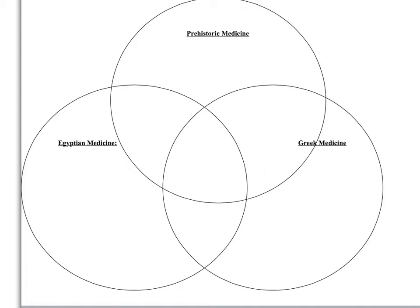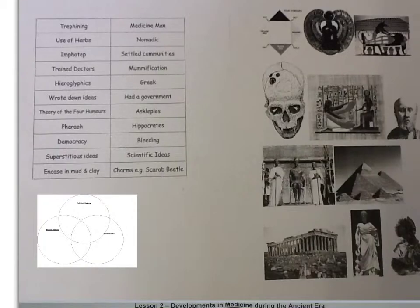Do the individuals or events apply to prehistoric medicine, Egyptian medicine, or Greek medicine? The ten events that you need to identify and place on your Venn diagram are as follows.